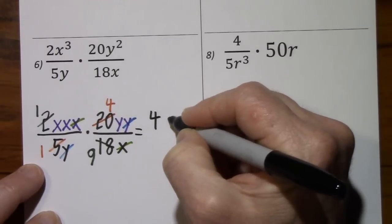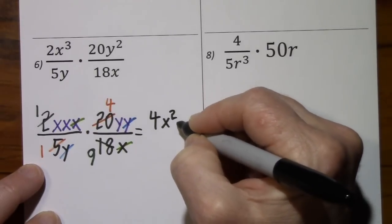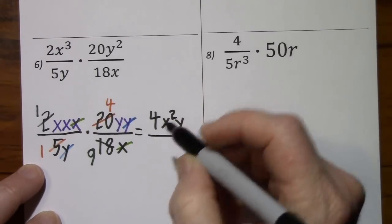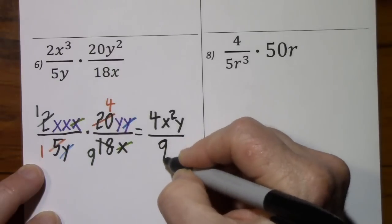So four x squared y, and in the denominator, nine.